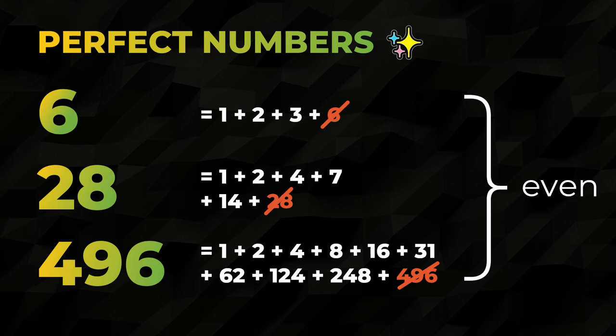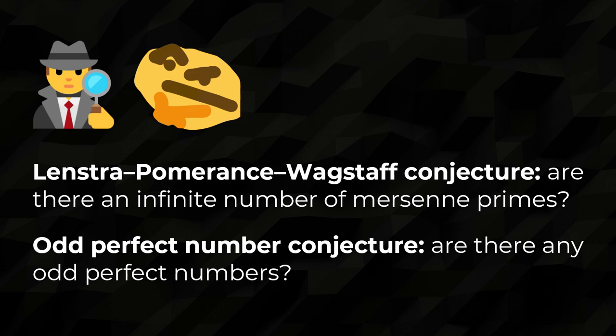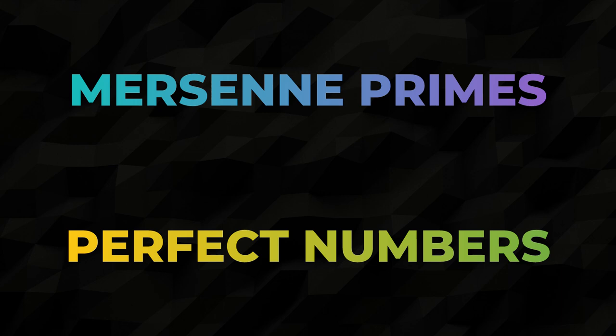Both of these sets of numbers are, somewhat famously, shrouded in conjecture and speculation. It's not known whether there are an infinite number of Mersenne primes, or whether an odd perfect number exists. Even more mysterious, though, is the fact that these two seemingly unrelated areas of math are intimately linked. For every Mersenne prime, a perfect number can be constructed. So, why?